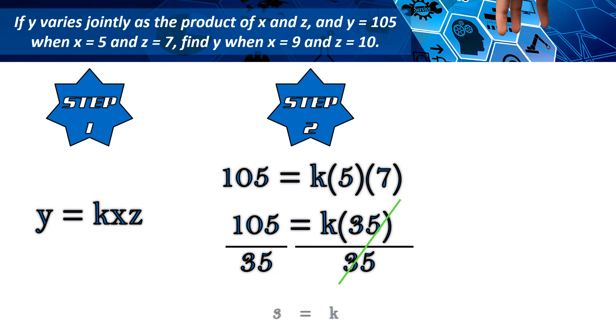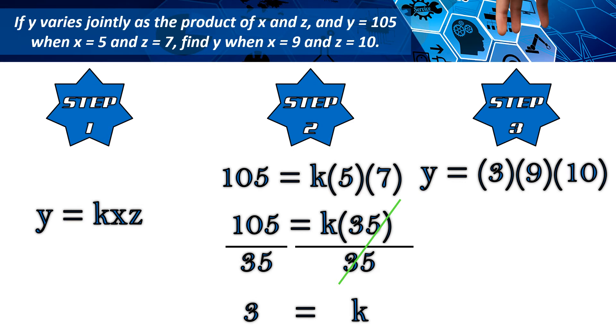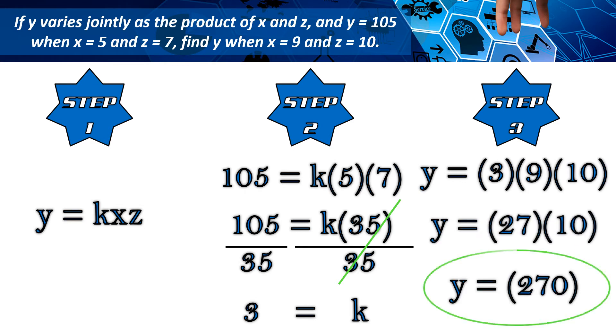Isubstitute ang value para sa step 2 at hanapin ang constant. Dinivide sa 35, kaya ang value ng k ay 3. At dito naman sa step 3, isubstitute pa rin ang pangalawang set ng values, pati ang constant. Kaya nakuha natin dito ang sagot na 270.